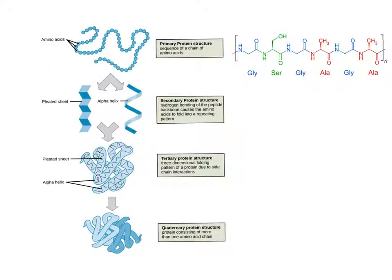Thus, in denaturation, even though the secondary, tertiary, and quaternary structures may be lost in a protein, the primary structure will remain.